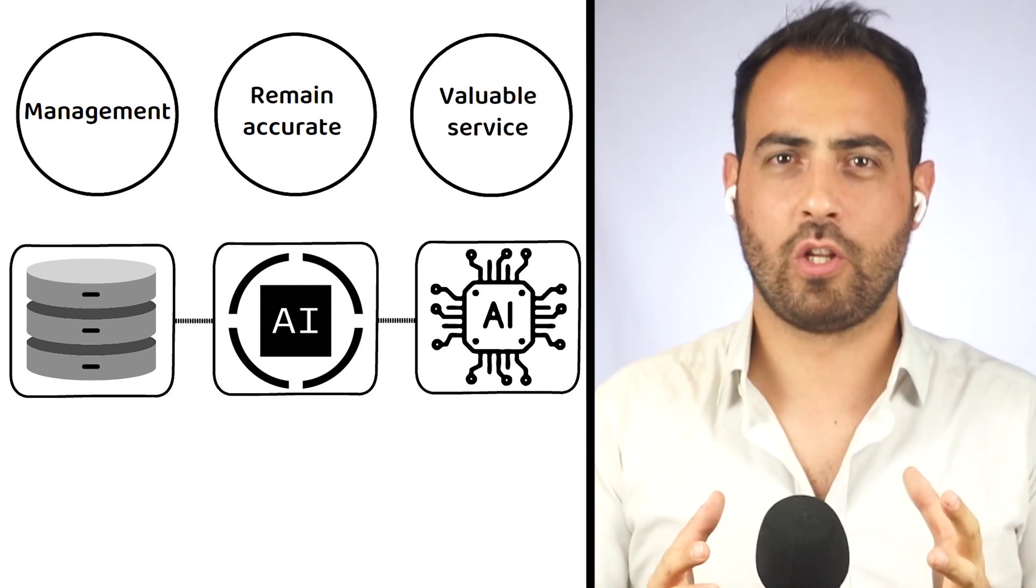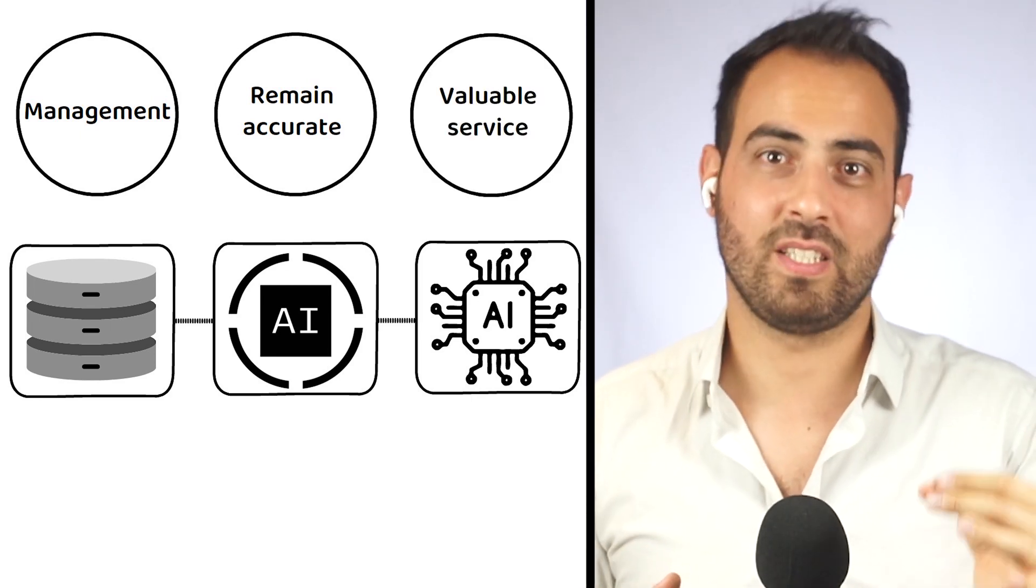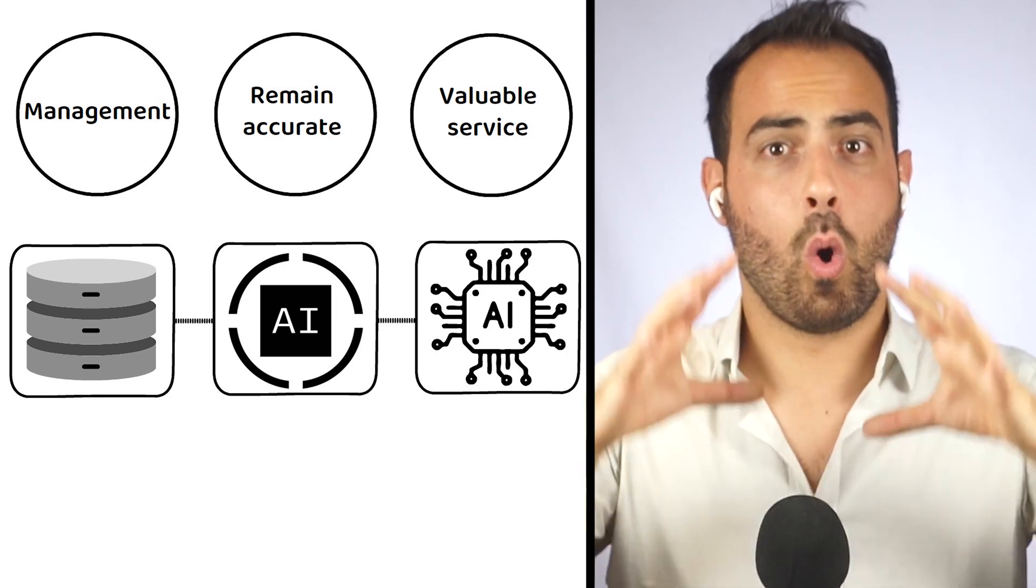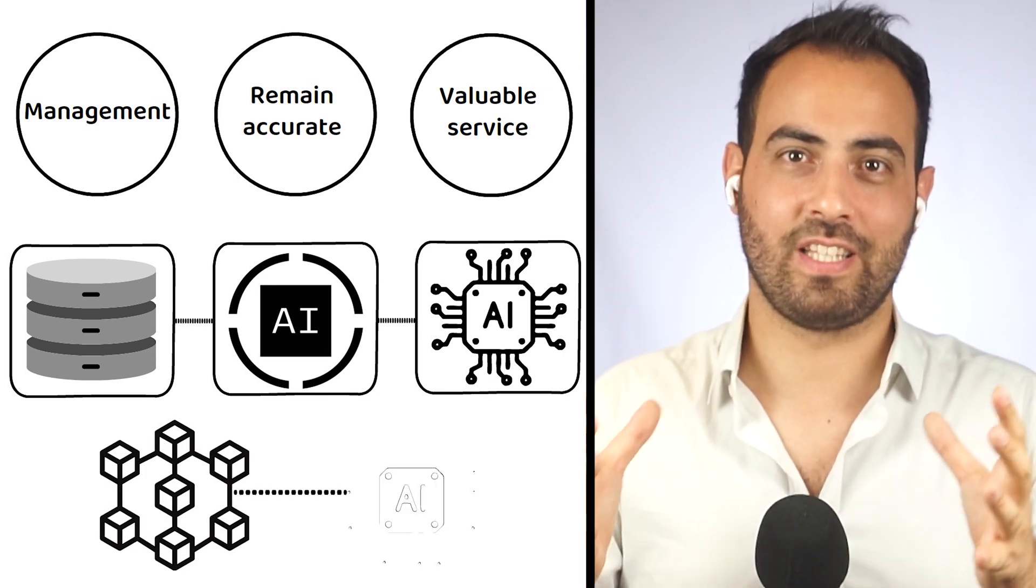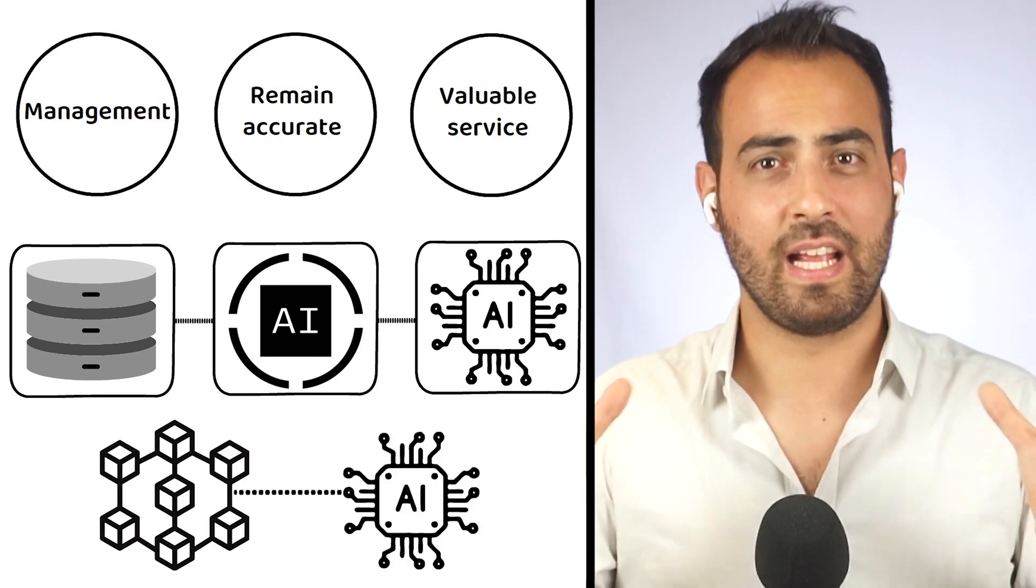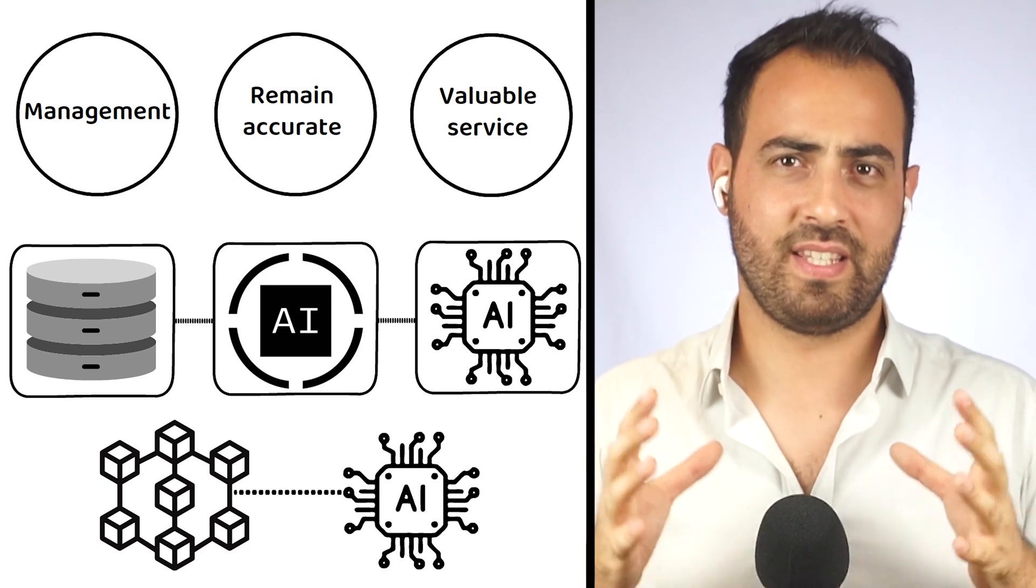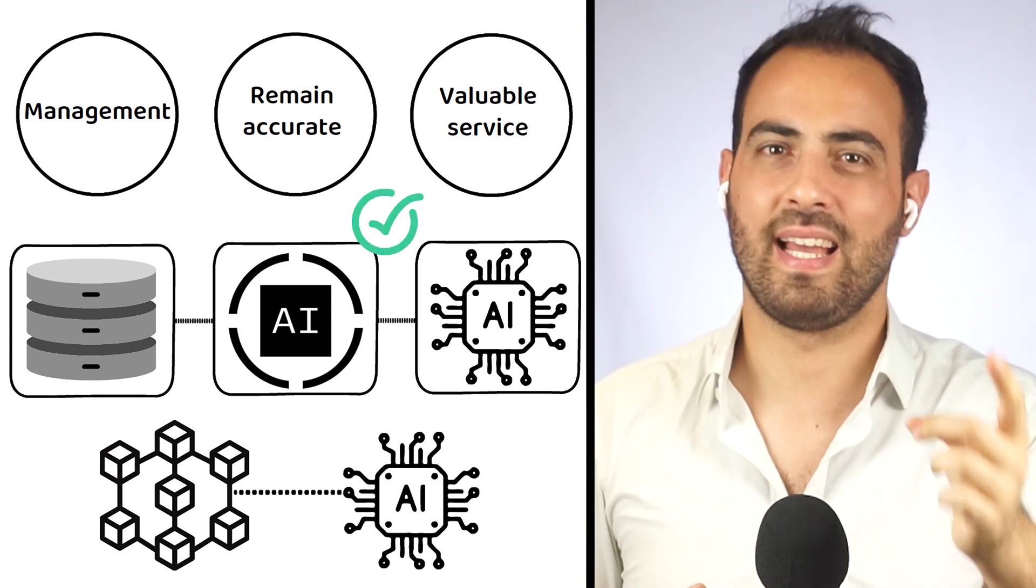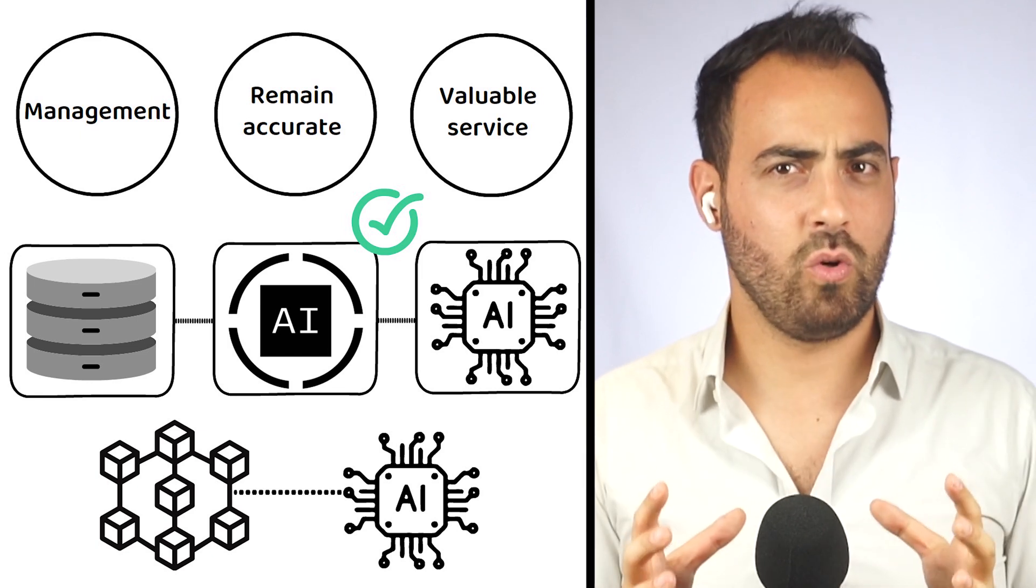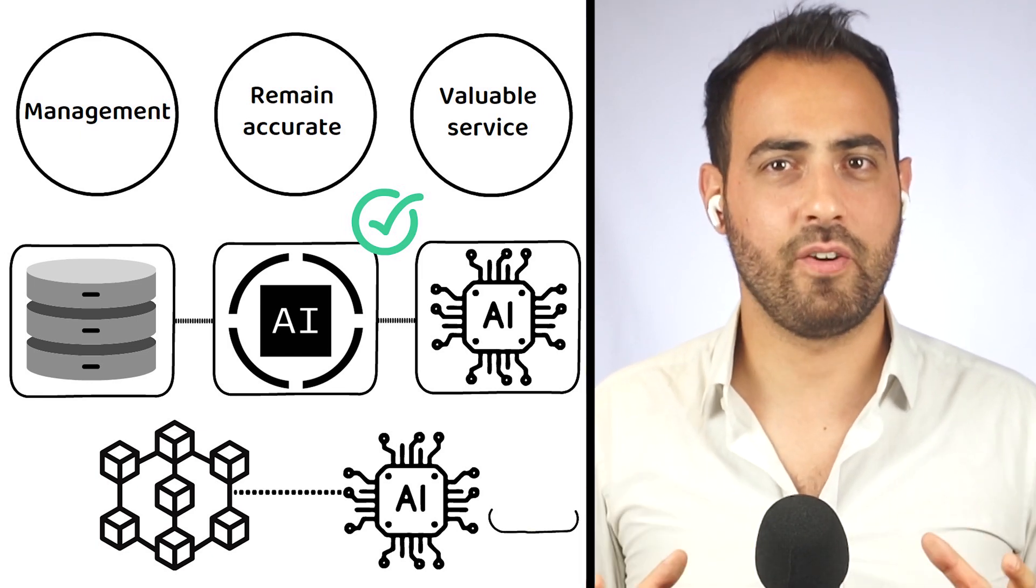However, as technology rarely disappears once it has been developed, it seems likely that eventually all blockchains will sooner or later be integrating AI technologies in some way into their platforms. If this is the case, then ORI chain may find itself ahead of the pack in that regard. But as always, nothing is ever guaranteed in crypto, of course.